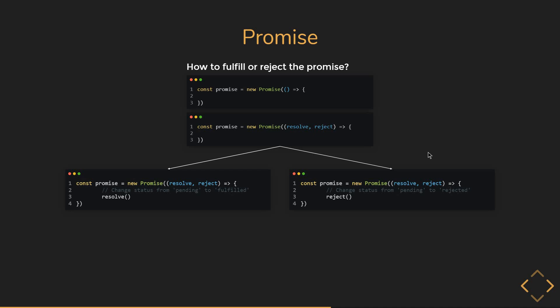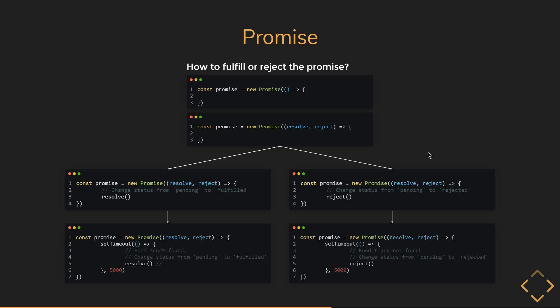Both resolve and reject are typically called after an async operation. To keep things simple, let's use a setTimeout. We'll assume that for your friend to go out and text you back it takes five seconds. If the food truck was found, we will call resolve after five seconds. If the food truck was not found, we call reject after five seconds. This is pretty much how you fulfill or reject a promise.